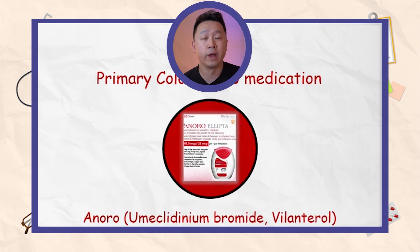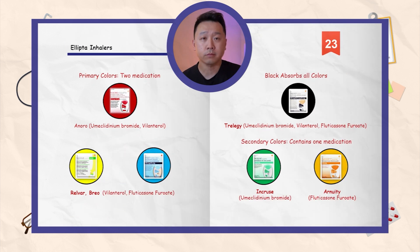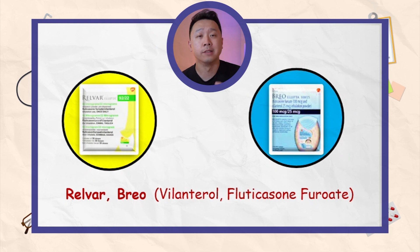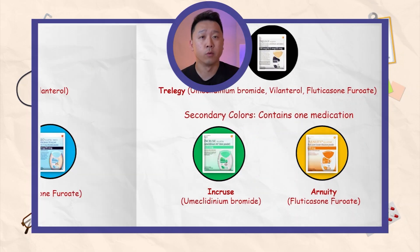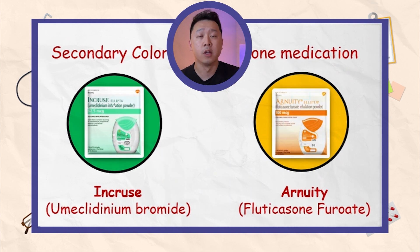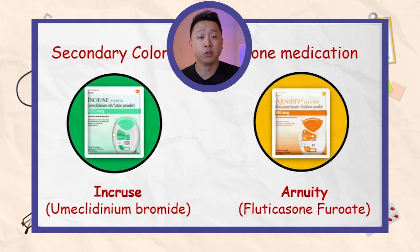Anoro, which is red, consists of umeclidinium and vilanterol. The yellow and blue consists of vilanterol and fluticasone. For the secondary colors, because they are not as important, each consists of one medication. We have two secondary colors: green and orange. The green one is Incruse, which is umeclidinium, and the orange is Arnuity, which is fluticasone.